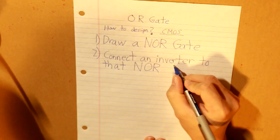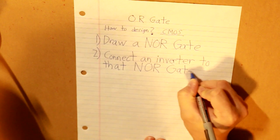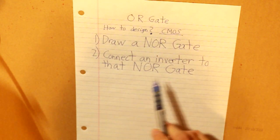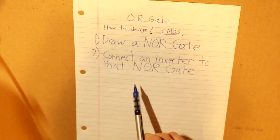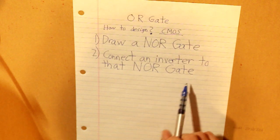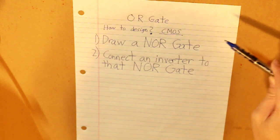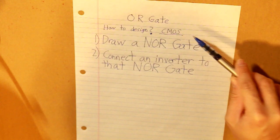Now, you may be wondering why we have to make an inverter. Well, if we have an inverter, if we find the inverse of a NOR gate, that will be our OR gate. So that is one method in how to design an OR gate using CMOS.